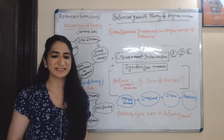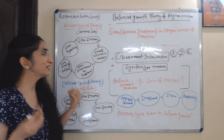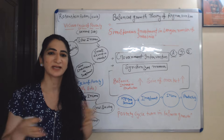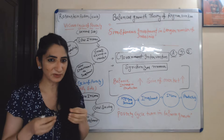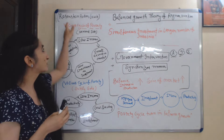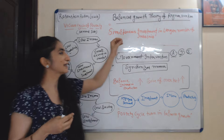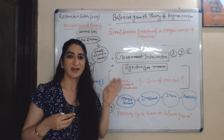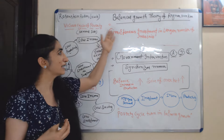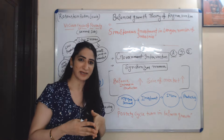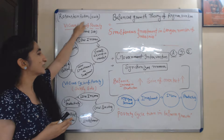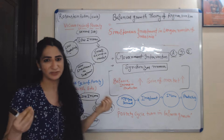Hi, my name is Mini Seti. Today we are going to learn about balanced growth theory. Balanced growth theory can be explained with the views of Rosenstein-Rodan, Lewis, and Ragnar Nurkse. But in today's video, we are going to learn about the balanced growth theory of Ragnar Nurkse. In the next video, we will study about Rosenstein-Rodan and Lewis theory.